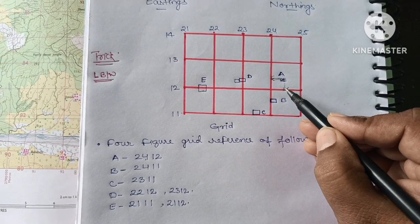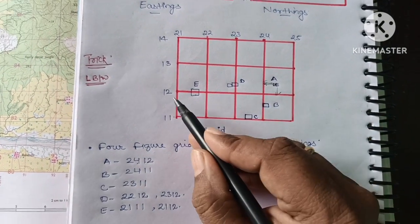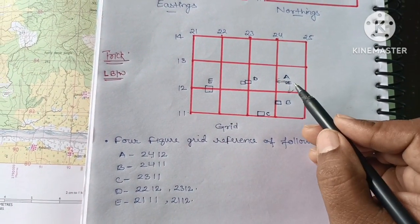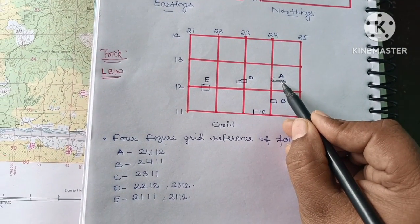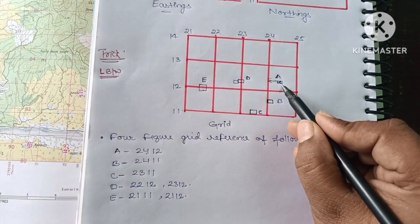After that, its bottom line. Bottom line means its value is 12. So there are four figures: one, two, three, four. So first, you will mark its left line that is easting. And after that, you will mark its bottom line that is northing.